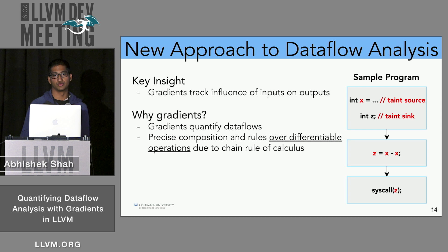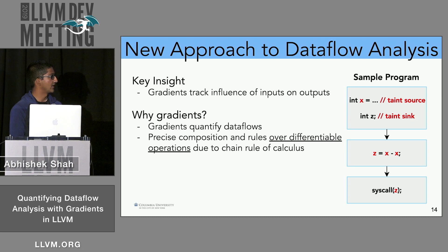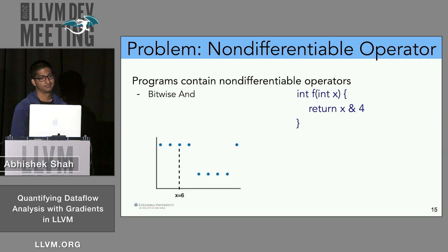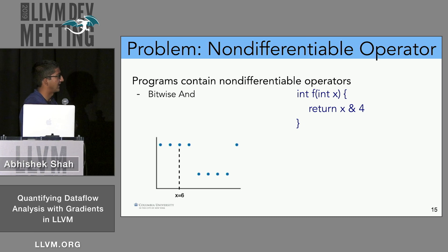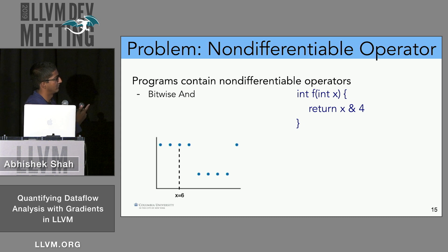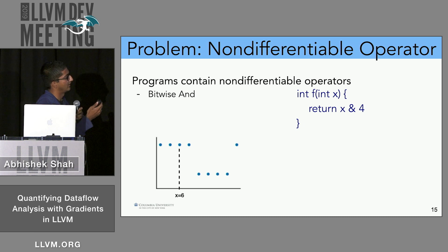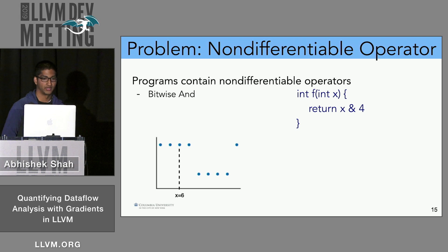Gradients quantify data flows and compose precisely due to the chain rule of calculus. However, the chain rule only applies to differentiable operations, and programs unfortunately contain non-differentiable operations. For example, the bitwise AND operator has a graph with discontinuities — when x equals 7 it outputs 1, but when x equals 8 it drops immediately to 0.